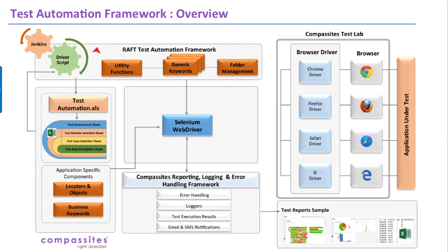Now let's look into RAFT architecture. We have already looked into utility functions, generic keywords, folder management, reporting, logging, and error handling framework. Let's look into the test automation XLS, which provides the input to the entire RAFT framework. The test automation Excel sheet has a test environment sheet where you can pick and choose the test environment — whether QA, staging, or production.